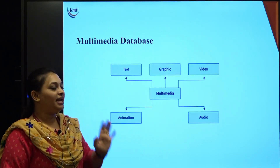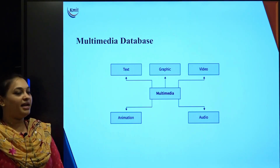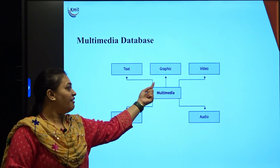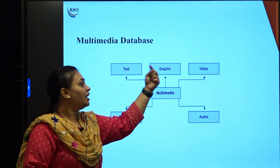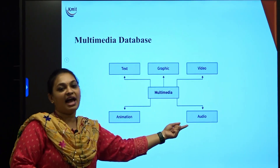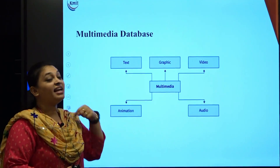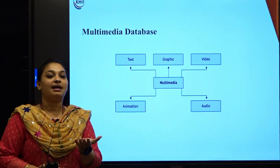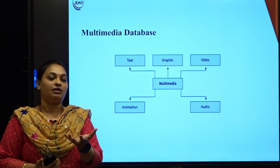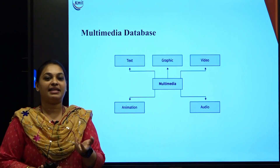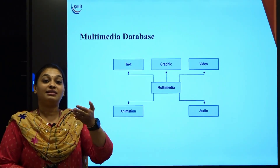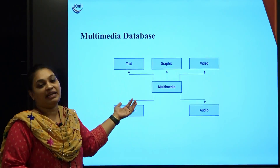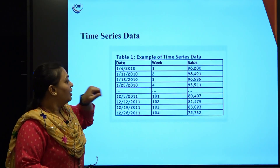Next is the multimedia database. A multimedia database can contain text, graphics, video, animation, and audio — any type of media. A best example is Google Lens: if you scan something or take a photo — say, a photo of a dog — it shows you similar dogs on screen. That is all because of the multimedia database.